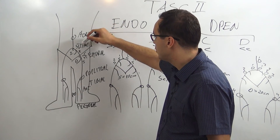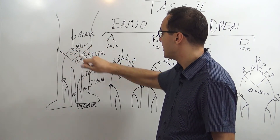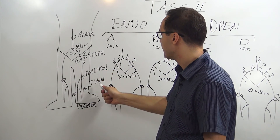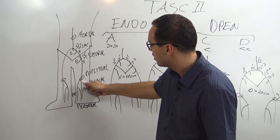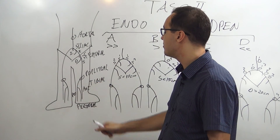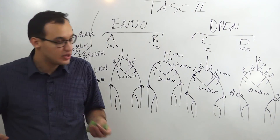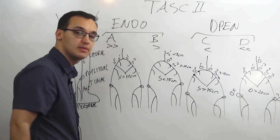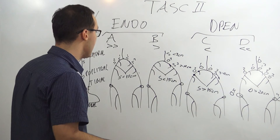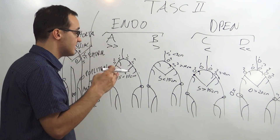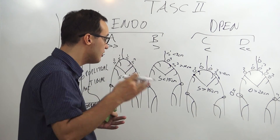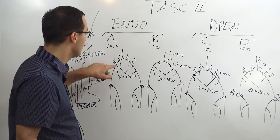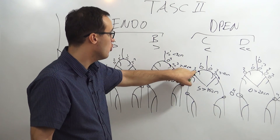Divide the iliac into three types: common, internal, and external. Divide the femoral into three types: common, deep, and superficial. Then the popliteal divides into anterior tibial and the tibial-peroneal trunk, which divides into posterior tibial and peroneal. Once you have that simplified diagram and draw it many times, you'll memorize it. To make memorization easier, concentrate on the letter patterns: S-S-S-S for A.